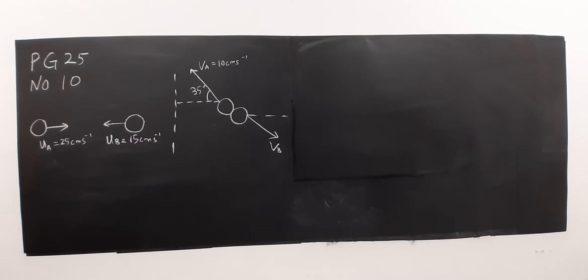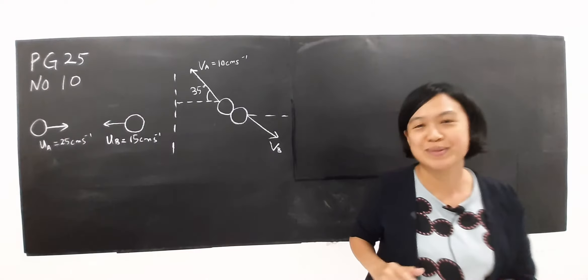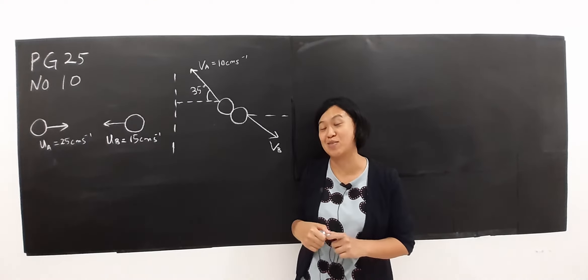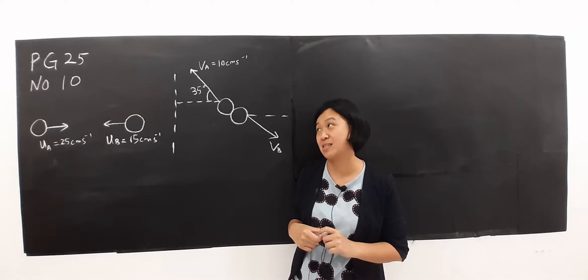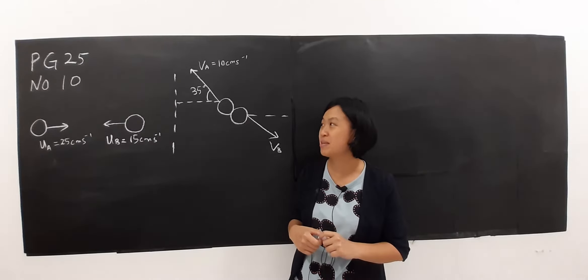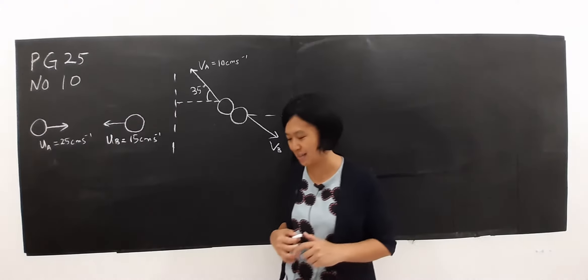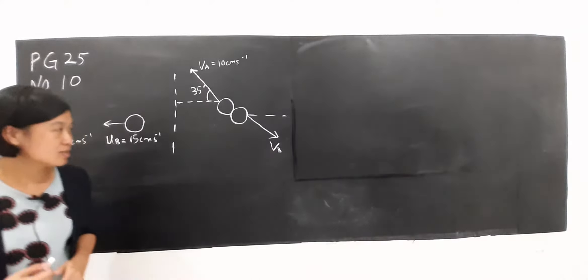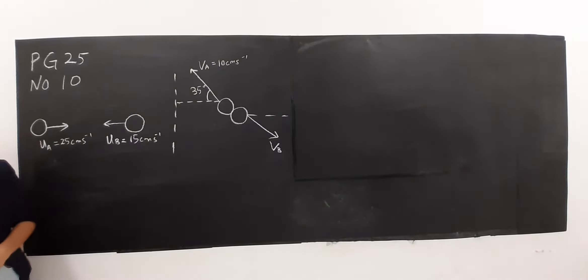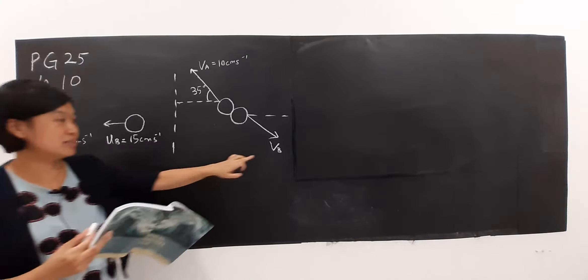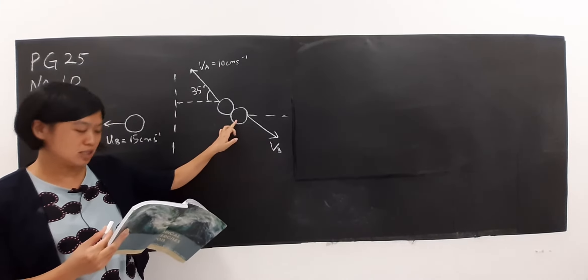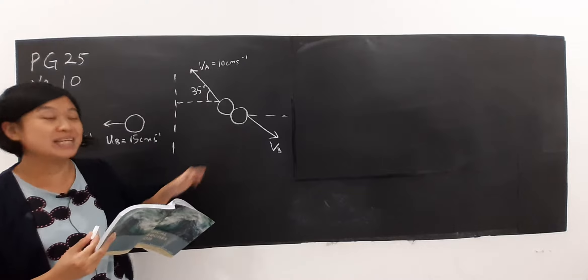Hi everyone, welcome to Madam Tan class. Let us continue with this exercise which is in our tutorial page 25 number 10. If you read the question, what they want is actually the final velocity for ball B.